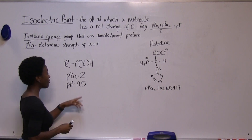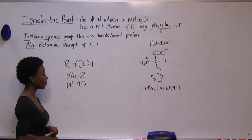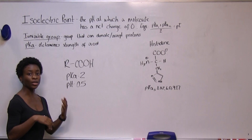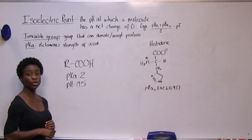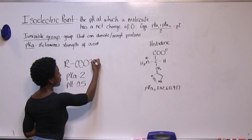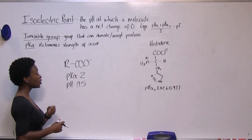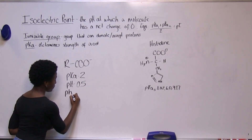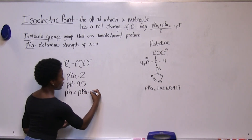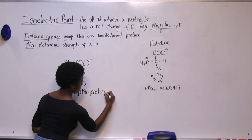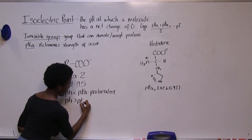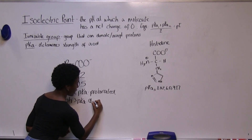At a very low pH our molecule is going to be in its protonated form. In order to raise the pH we need to add hydroxide ions. As we add hydroxide ions and once we pass a pH of two, this proton is going to pop off and that will be in a deprotonated form. So essentially when our pH is lower than our pKa, our ionizable group is going to be in a protonated form, and when our pH is higher than our pKa, it's going to be in its deprotonated form.